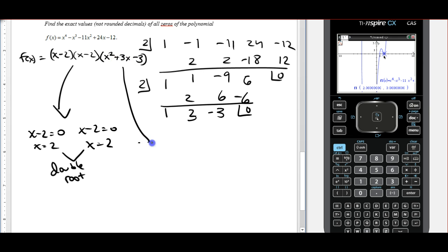But this piece is a little bit more interesting because now I have x squared plus 3x minus 3 equals 0. And that is a quadratic that doesn't factor. So we'll have to use the quadratic formula.